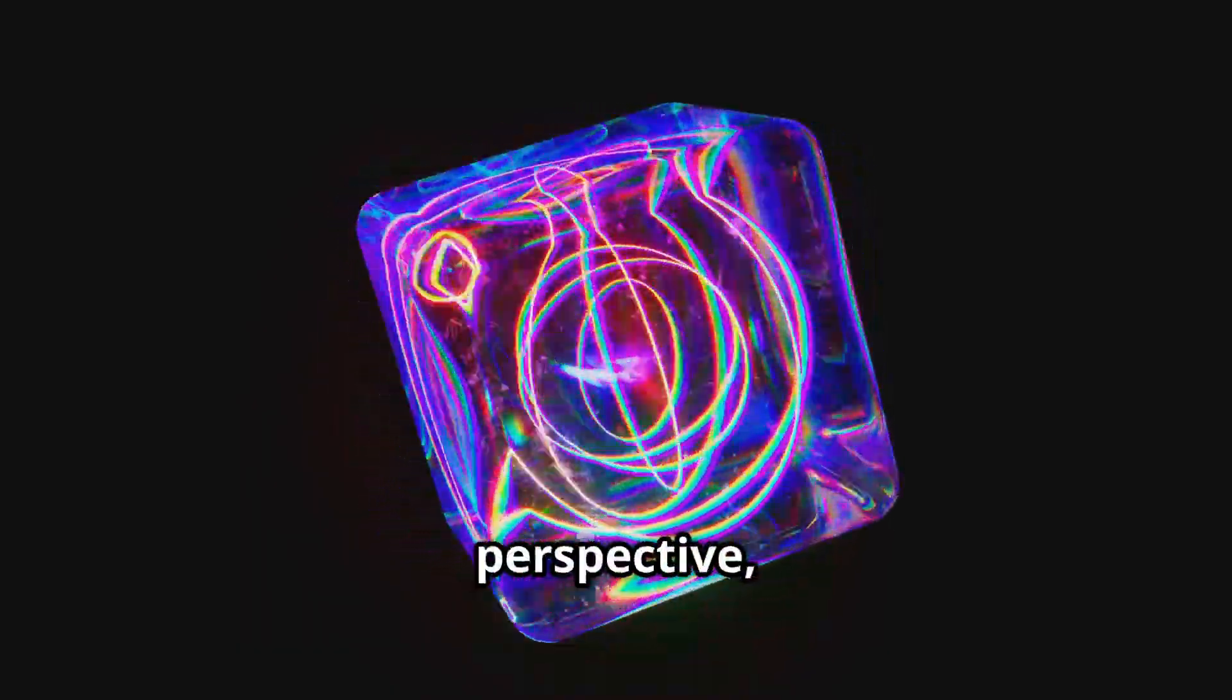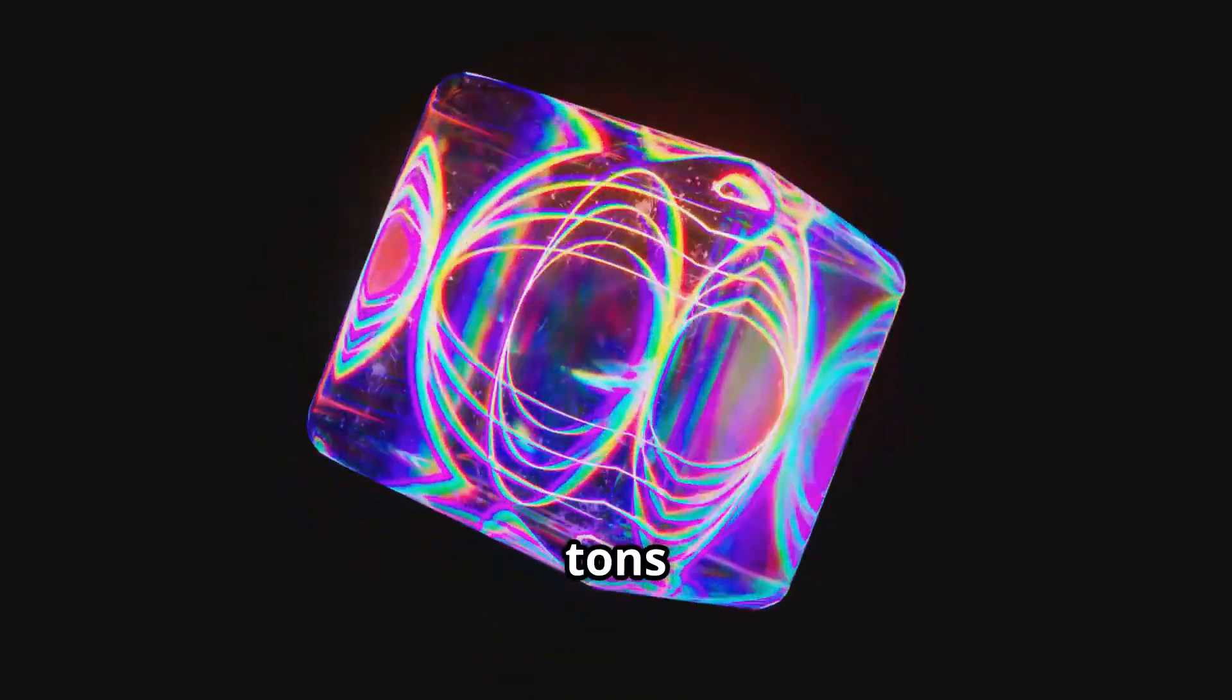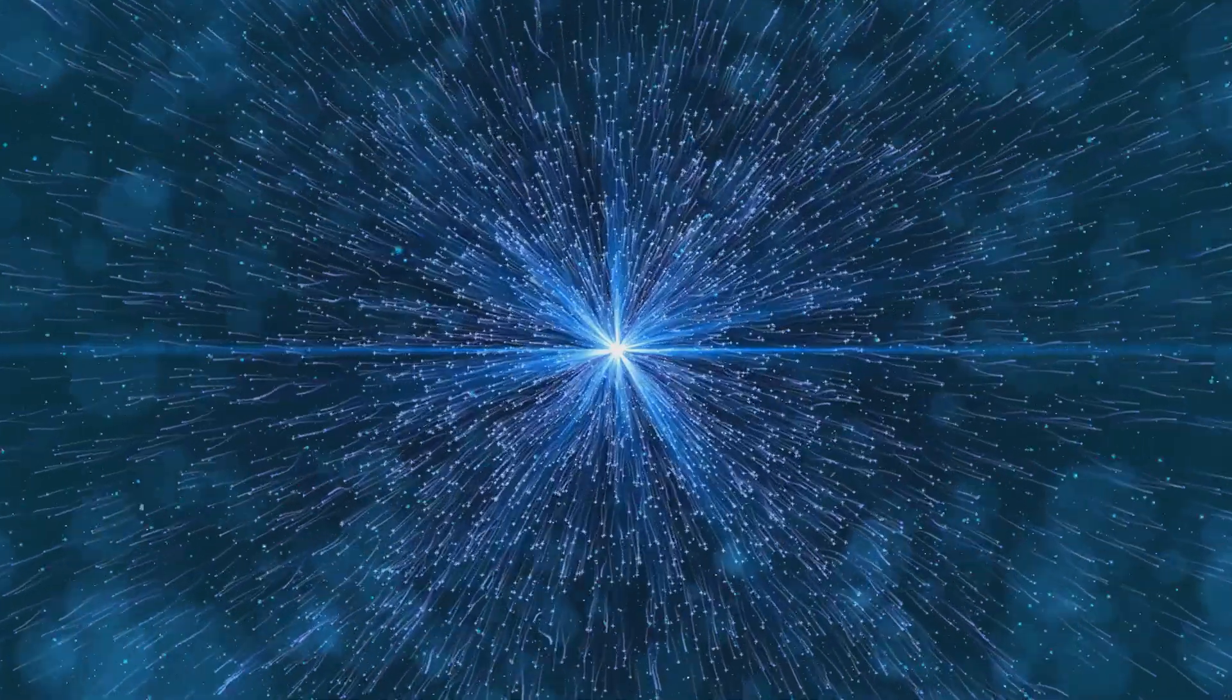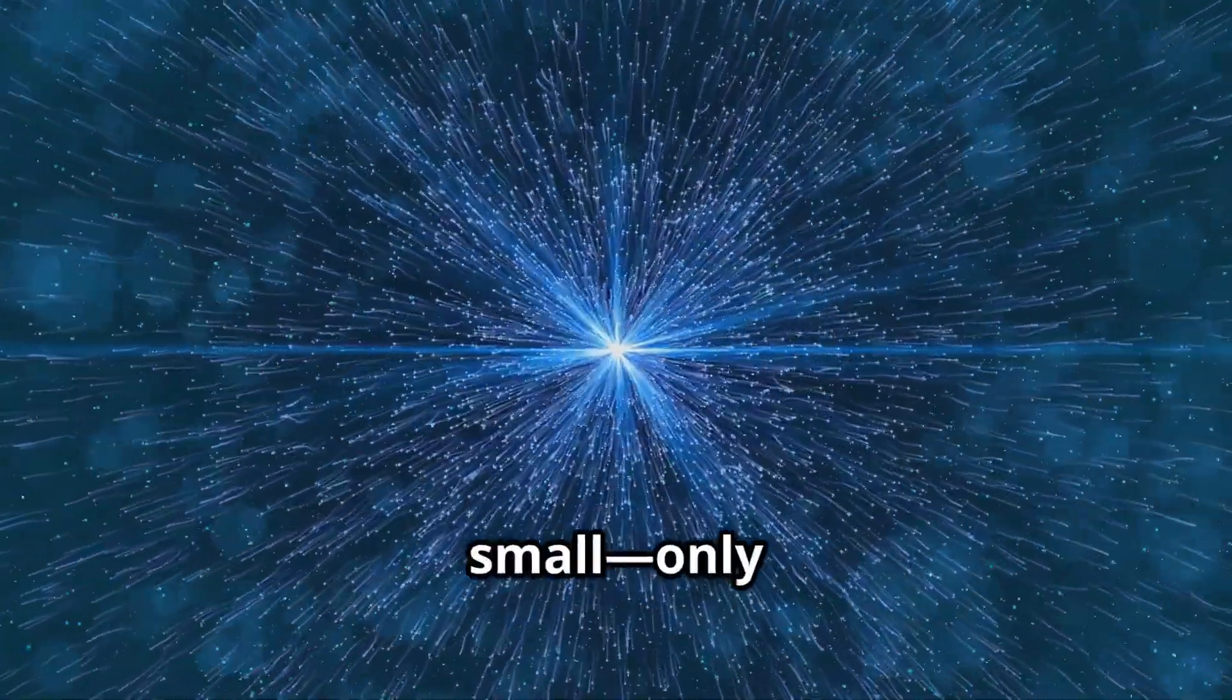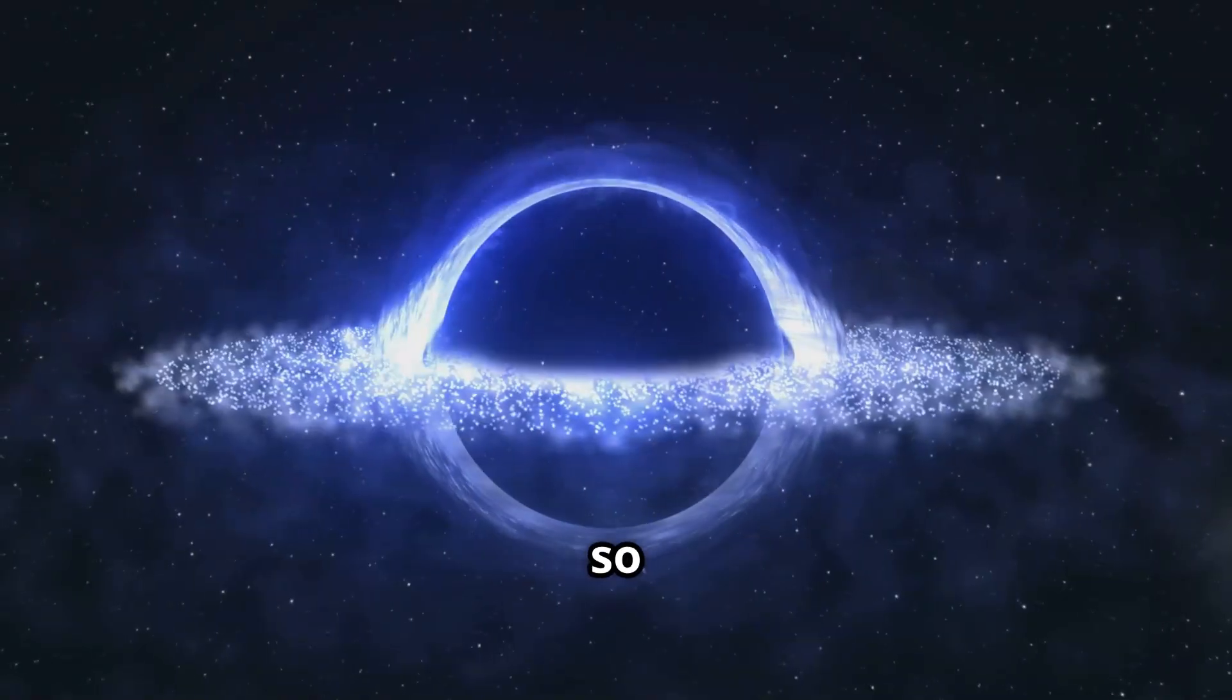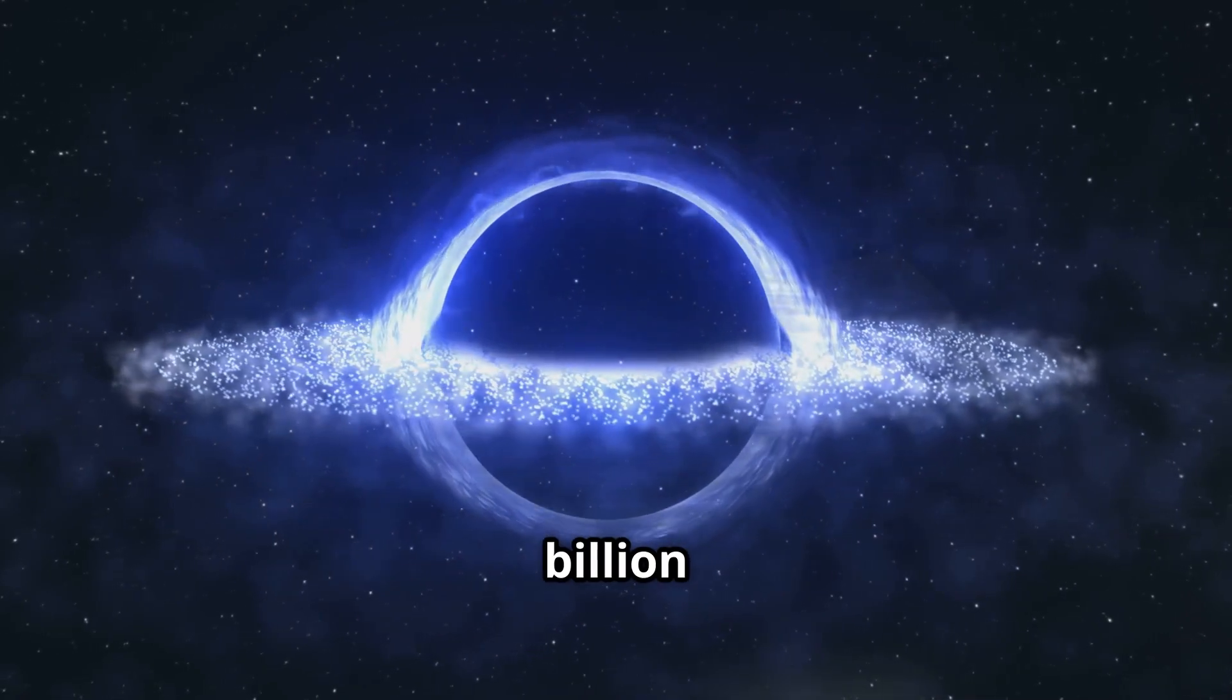To put it in perspective, a small cube of a neutron star would weigh a mind-boggling 7 billion tons, like squeezing Mount Everest into a ball the size of a marble. Even though they're unimaginably heavy, neutron stars are surprisingly small, only about 6 meters in radius. Imagine something so dense that a sugar cube-sized amount of its material would weigh about a billion tons on Earth.